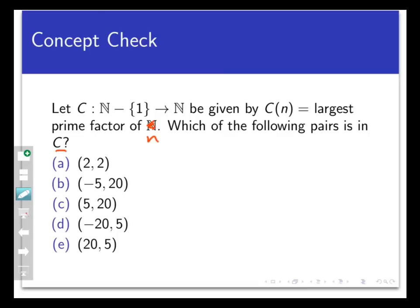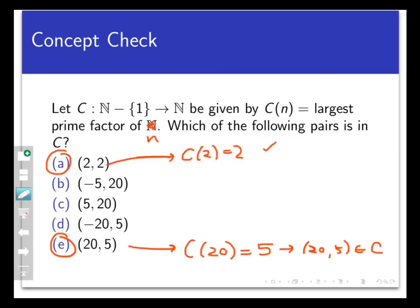The correct answers here are a and e only. Now let's see why. The general idea is that a comma b is in c if c of a equals b, that is, if the greatest prime factor of a equals b. So 2 comma 2 belongs to c because the greatest prime factor of 2 is 2. That's because 2 itself is a prime number. And 20 comma 5 is in c because if you think of the factorization of 20, that's 2 times 2 times 5, and the greatest prime factor there is 5. So c of 20 would equal 5, and that makes 20 comma 5 a pair that belongs to the set c.